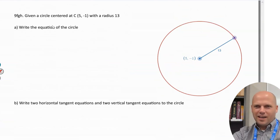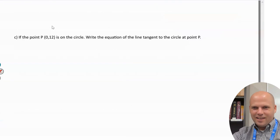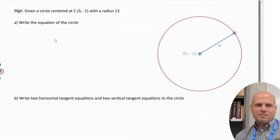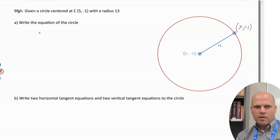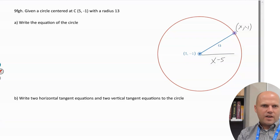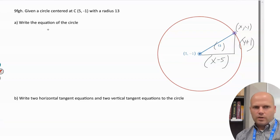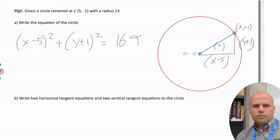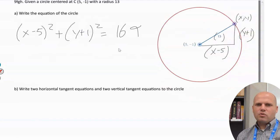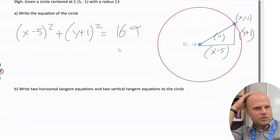Circle centered at (5,-1) with radius 13: find all (x,y) points that are 13 away from (5,-1). The x-distance is (x-5), the y-distance is (y+1). Using a² + b² = c²: (x-5)² + (y+1)² = 169.